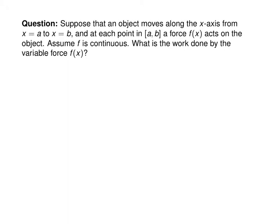In the previous example, the force was constant. Now suppose instead we have a variable force f of x that acts on an object — assume that f is continuous. We want to compute the work done by f of x as x varies between a and b. We start by taking our interval from a to b and dividing it into little pieces of width delta x equal to b minus a over n.